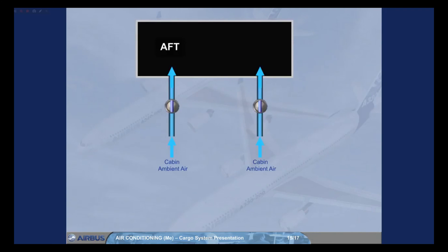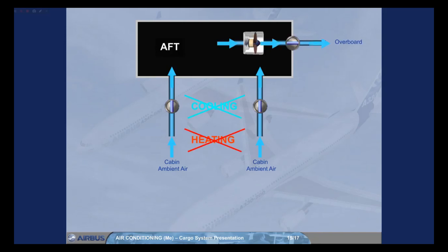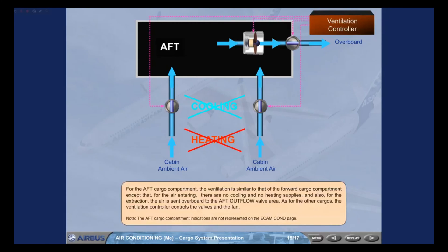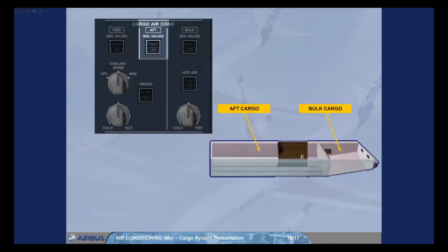For the aft cargo compartment, the ventilation is similar to that of the forward cargo compartment, except that for the air entering there are no cooling and no heating supplies, and also for the extraction the air is sent overboard to the aft outflow valve area. As for the other cargos, the ventilation controller controls the valves and the fan. Note: the aft cargo compartment indications are not represented on the ECAM COND page. As the aft and bulk cargo compartments on the long range are separated, the aft compartment has its own isol valves pushbutton switch, which has the same function as for the bulk cargo compartment. Note: there are no heating and cooling options.